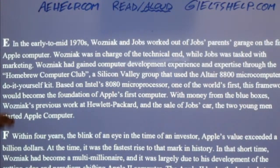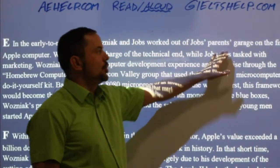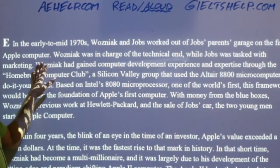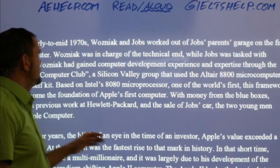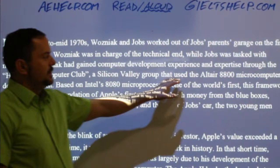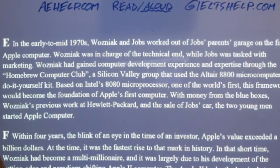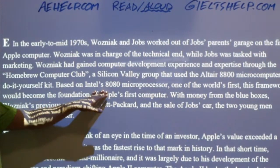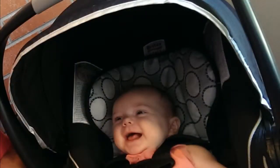In the early to mid-1970s, Wozniak and Jobs worked out of Jobs' parents' garage on the first Apple computer. Wozniak was in charge of the technical end while Jobs was tasked with marketing. Wozniak had gained computer development experience and expertise through the Homebrew Computer Club, a Silicon Valley group that used the Altair 8800 microcomputer do-it-yourself kit based on Intel's 8080 microprocessor — one of the world's first.